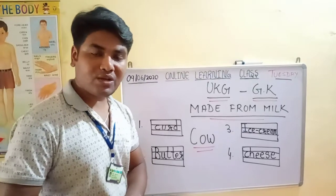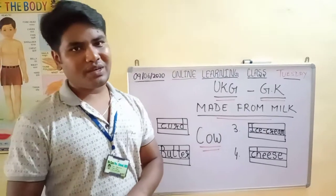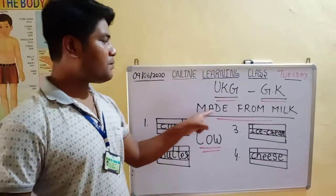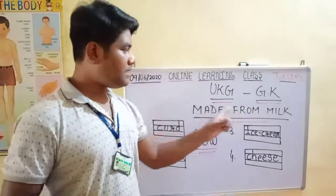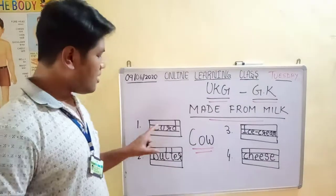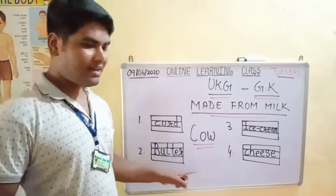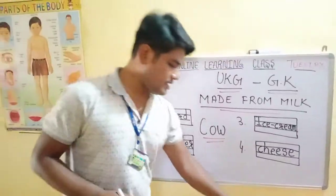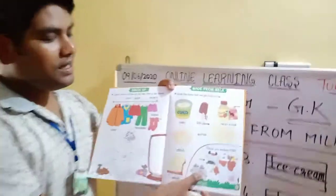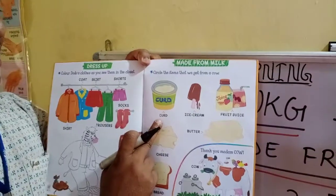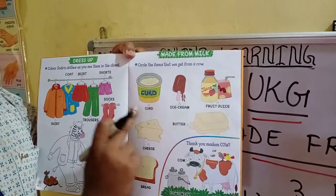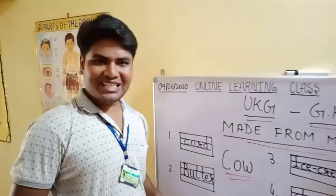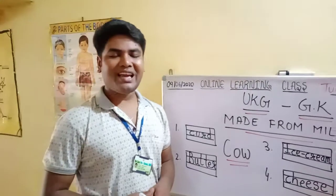Write down in your GK homework copy, three-in-line copy. Parents, please help the children learn the spellings: curd, ice cream, butter, and cheese. Children, point out every word and learn the spellings at home. Goodbye.